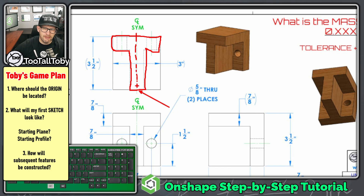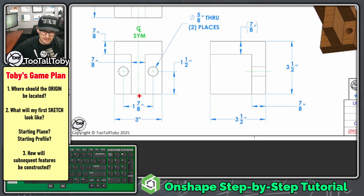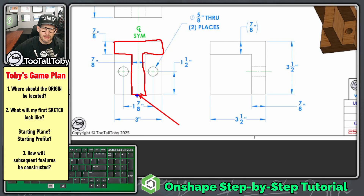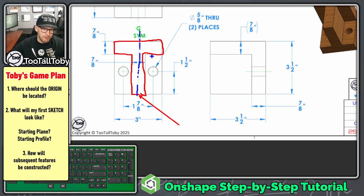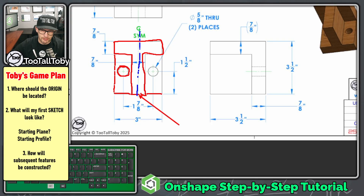What I'm going to do is put the origin right here, because this model has symmetry and we're going to take advantage of that. Our first sketch is going to be on the front plane — we'll create this T-shape there. The origin goes here, and we'll create a center line so we can just draw half of the T-shape and mirror it across. Using OnShape, we can take advantage of the contour functionality — make this whole sketch and mirror the whole thing.